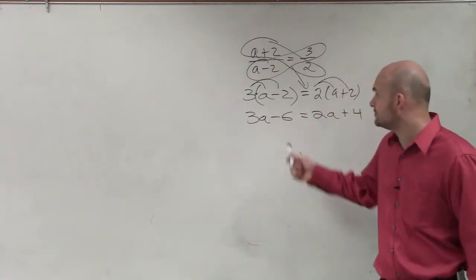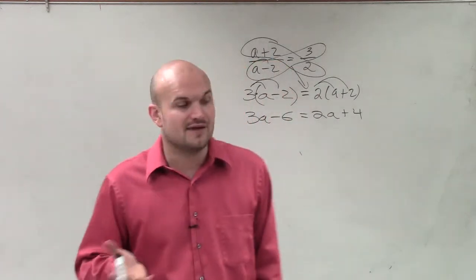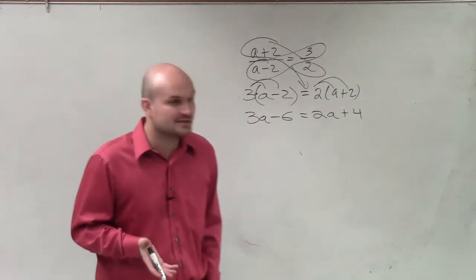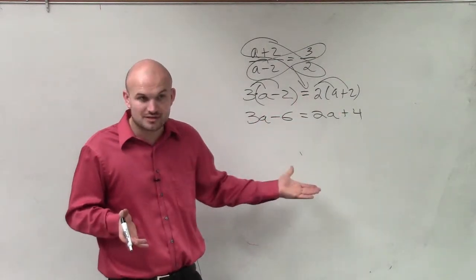And now what I need to do is I have an issue, though, now, because now I have a variable, Layla, that is on the left side. And I have one on the right side, Lauren. To isolate this, guys, you've got to get the variable by itself. We have a variable on both sides of the equations.